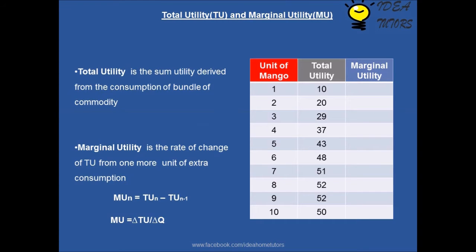Total utility is the sum of individual utility derived from the consumption of a bundle of commodities.